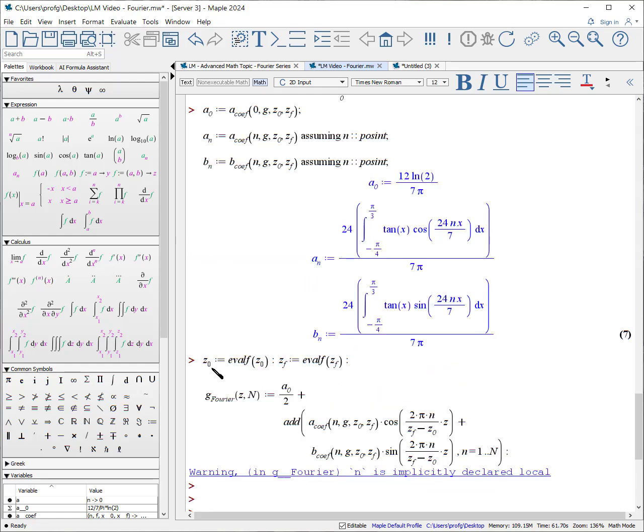So what we do is we first calculate the floating point approximations to our endpoints, and then we use those to build our function g Fourier, for which we're going to add up rather than sum the coefficients, and each coefficient is going to be an individual n value. Therefore this will be a numerical calculation for both a and b. Ignore the warning here that says n is implicitly declared local.